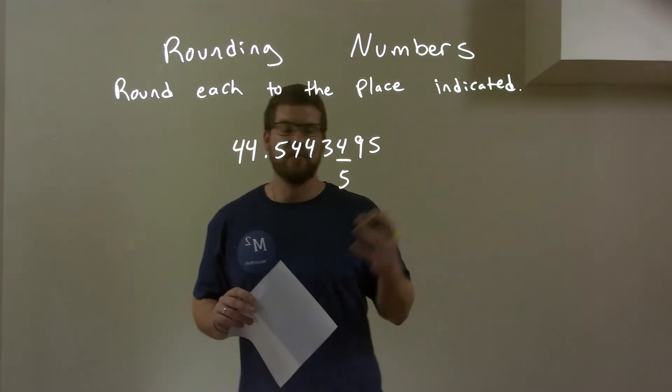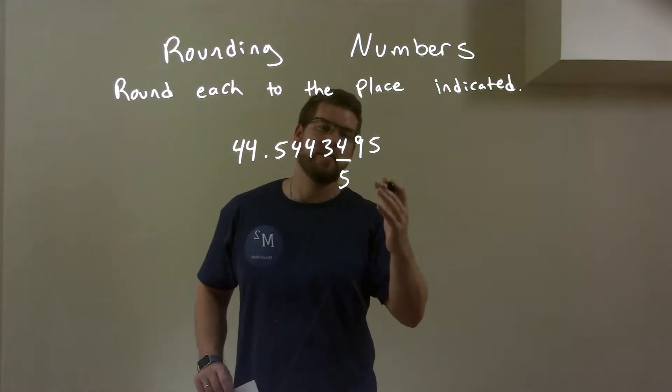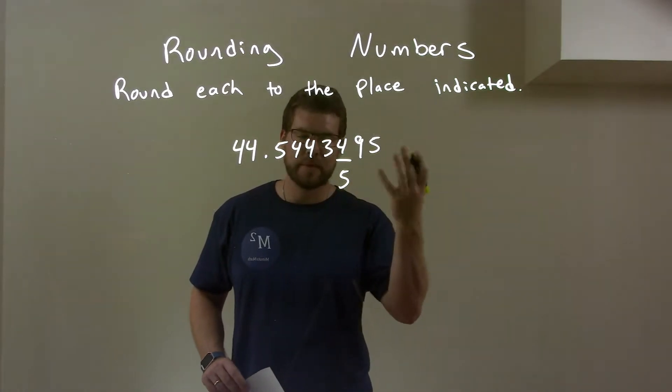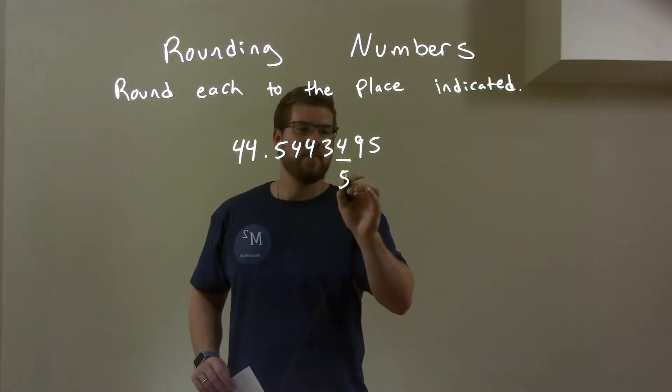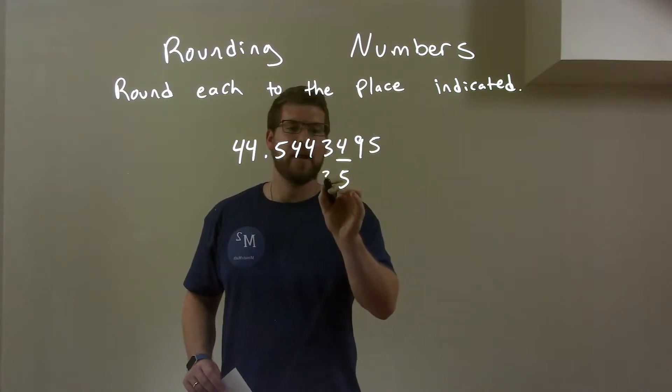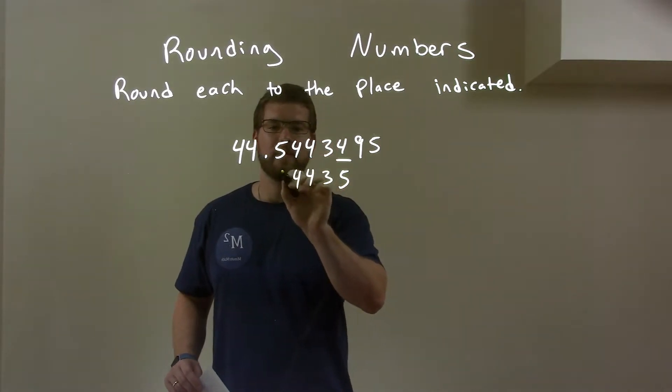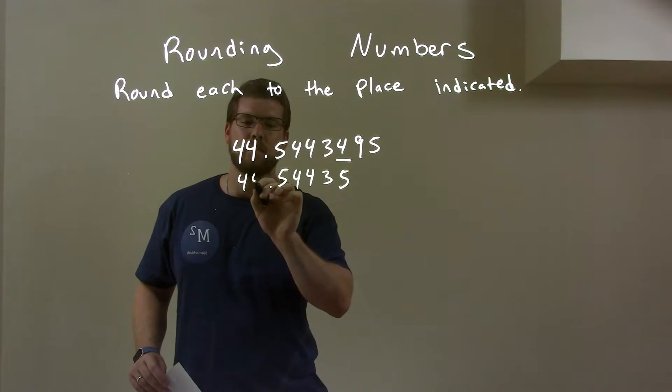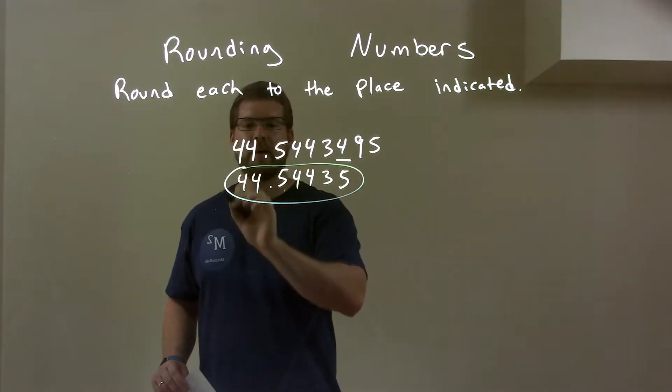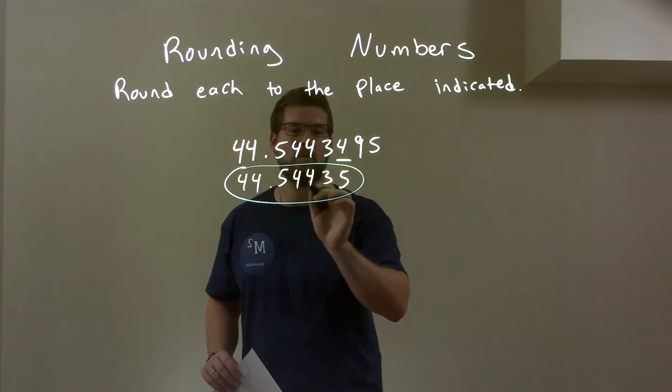But it depends really on what your teacher wants. Some people say write zeros afterwards because it shows that you were rounded, but either way, the 5 is there. We don't really need to write the zeros. I'll bring everything else down. And here we have our final answer, 44.54435.